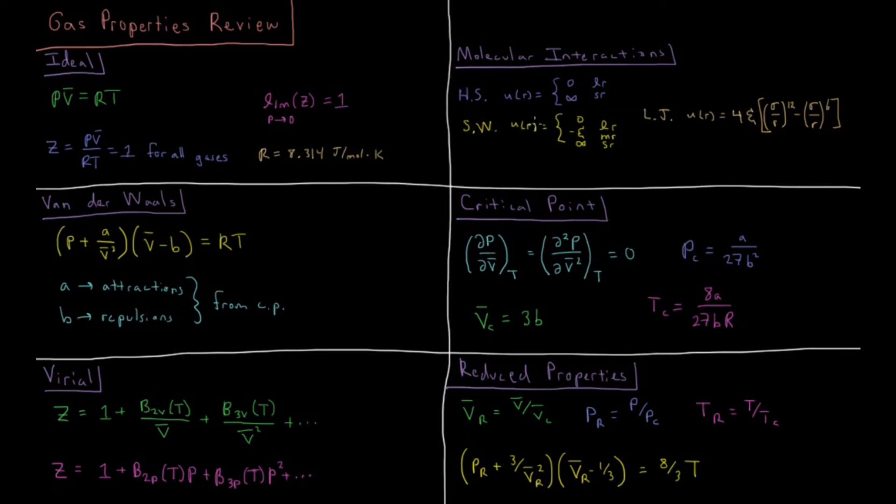You have the square well potential where the potential is 0 at long range, minus epsilon, some parameter, at medium range, and then infinity at short range. This is a modified hard sphere with some attractive region in the middle.